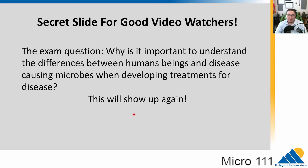I wanted to throw in this secret slide for you good video watchers. The exam question: why is it important to understand the differences between human beings and disease-causing microbes when developing treatments for disease? This question is going to show up again. The key thing here is that we use the differences between humans and disease-causing microbes to find things that only happen in microbes, so we can target them to kill the microbe without killing the human. That's the whole goal of our drug therapies. This will show up again on a future test.